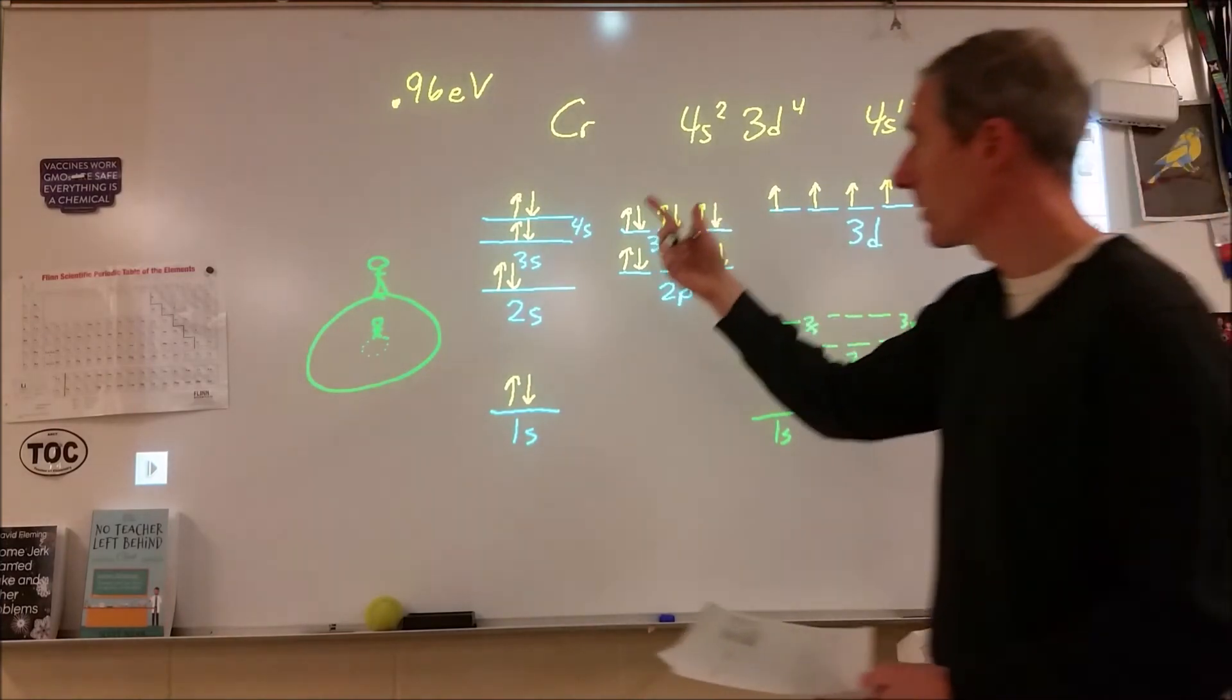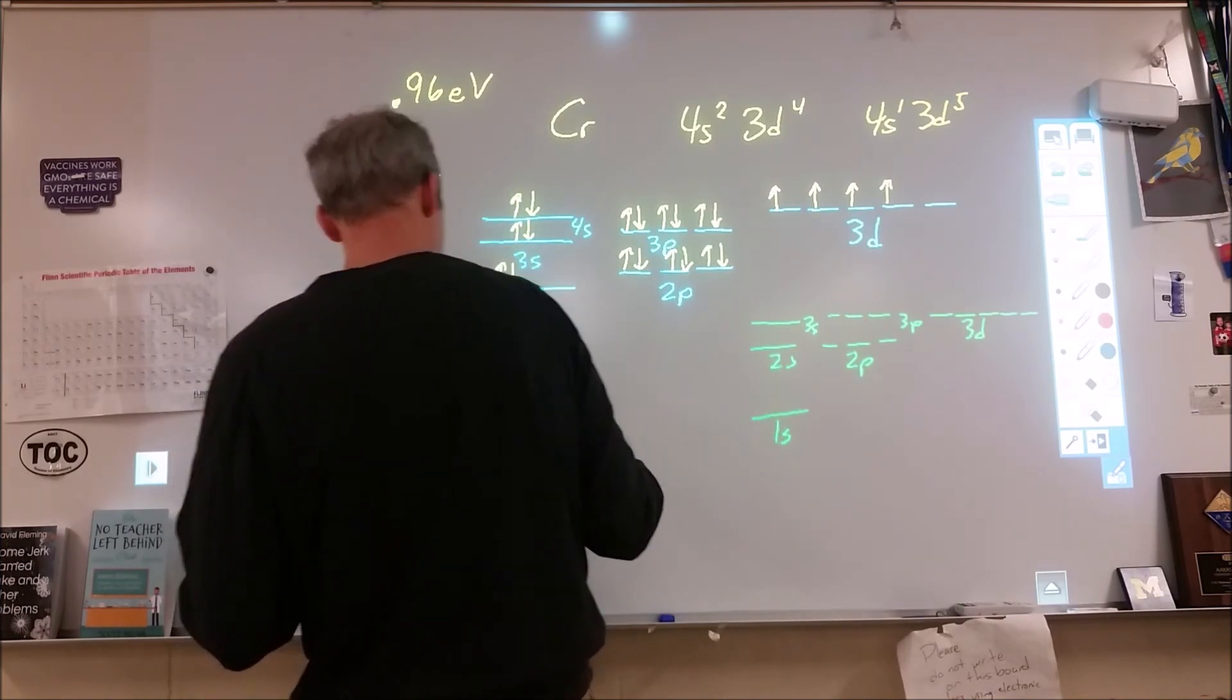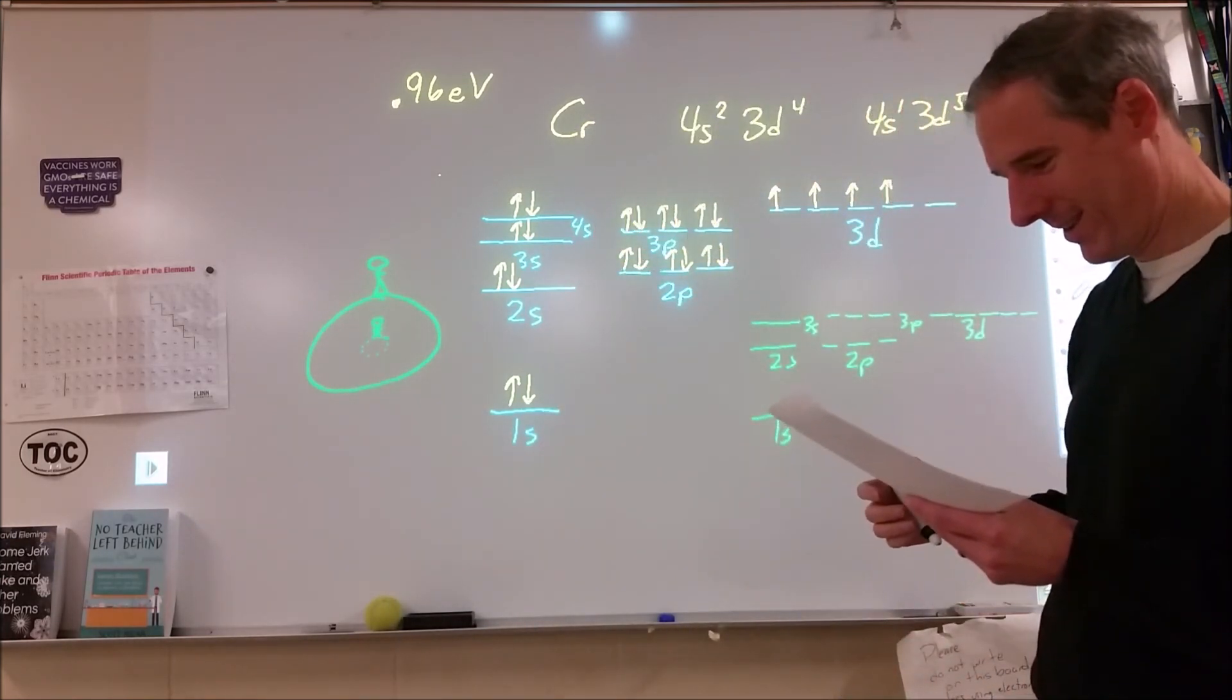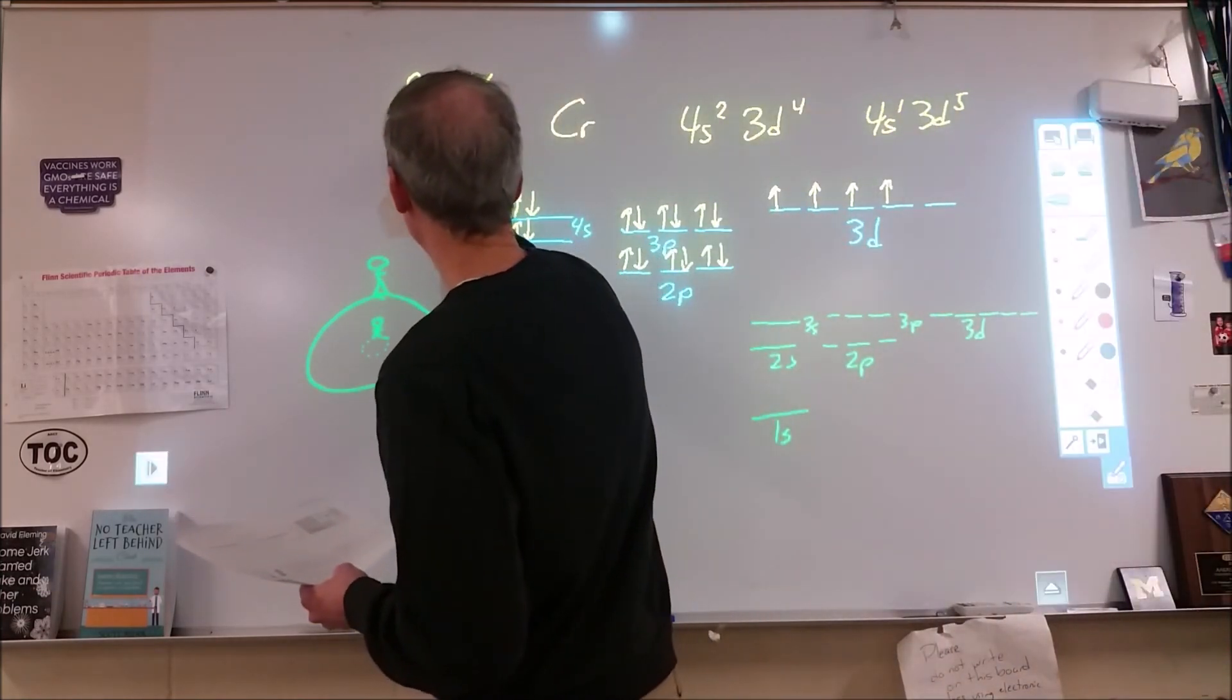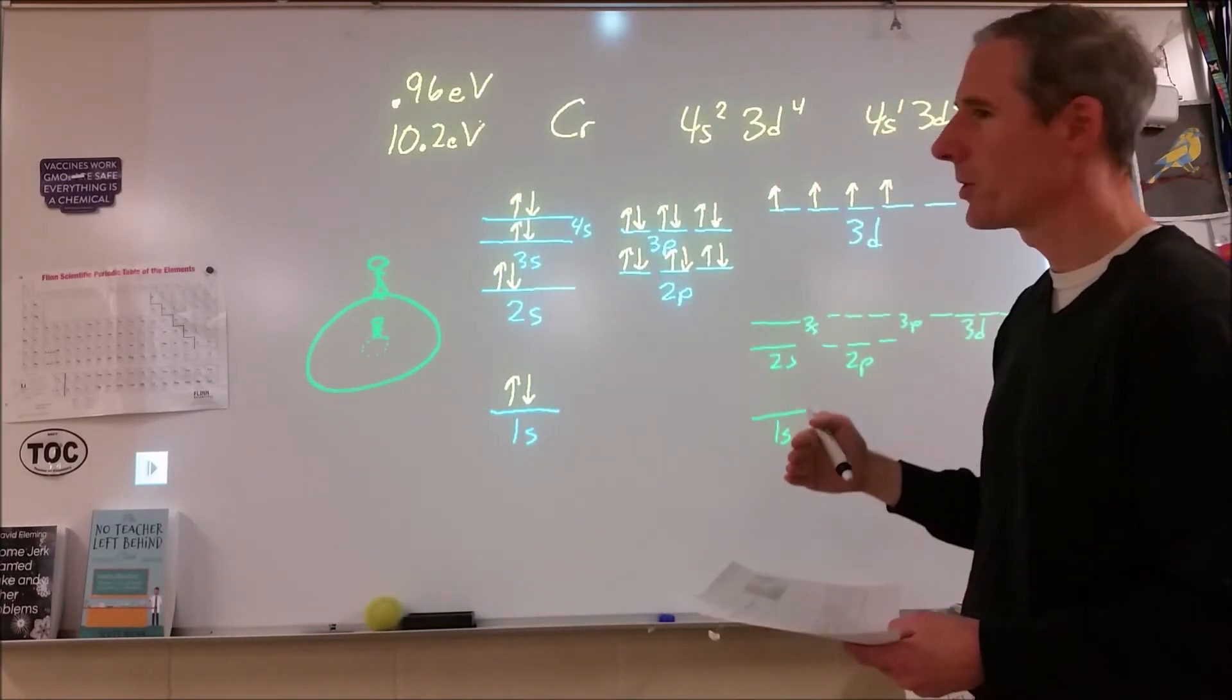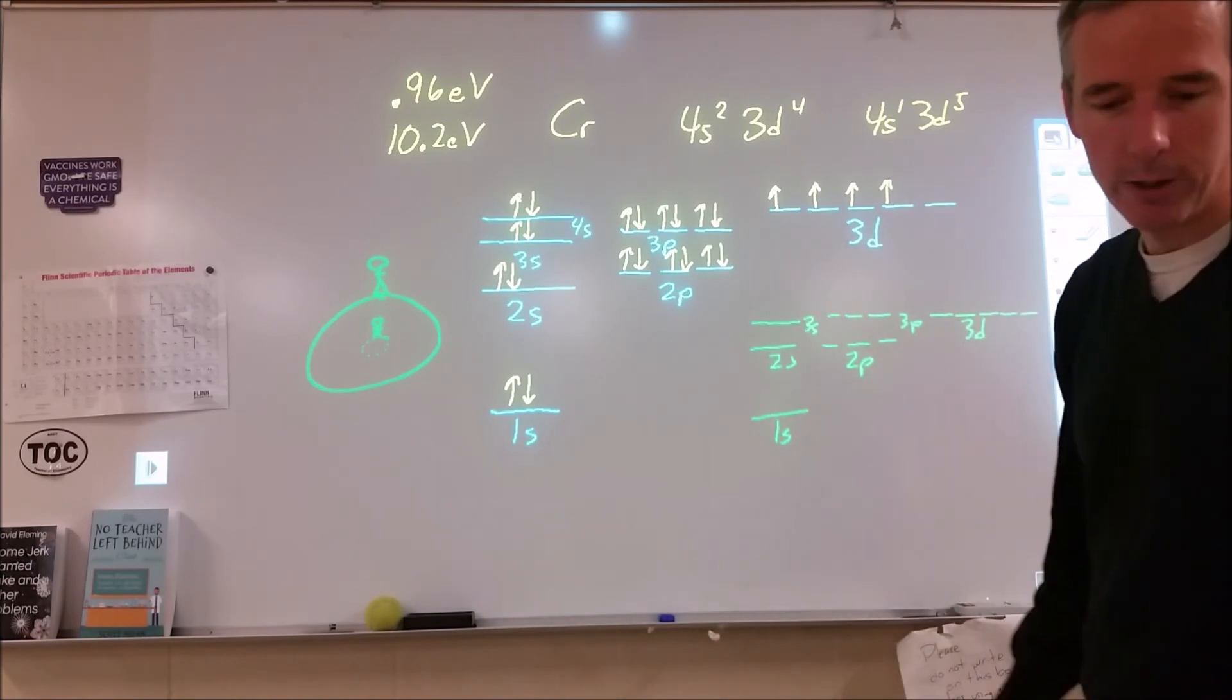Now 0.96 electron volts, that's not a common unit. So just to give you some context, the difference between 1s and 2s in a hydrogen atom is 10.2 electron volts. So, and that's with one proton. So you think about one proton and obviously one to two is a big gap, but 0.96 is a pretty small amount of energy difference between these two things. And so you can expect some population of this even at low temperatures.